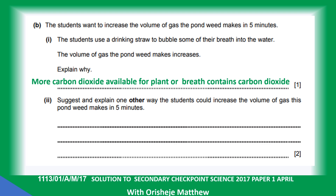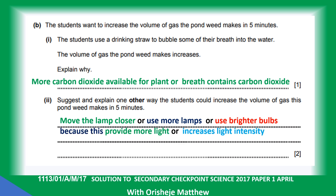Suggest and explain one other way the student could increase the volume of gas the pond weed makes in five minutes. Move the lamp closer, use more lamps, or use a brighter lamp, because this provides more light or increases the light intensity.